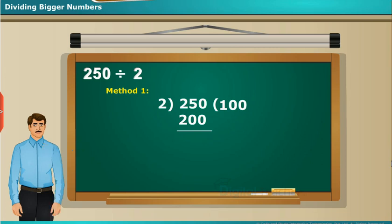Step 2: After step 1, it leaves a remainder of 50 which is 25 times of 2, that is 2 into 25 equals 50. Step 3: So 250 divided by 2 leaves the remainder as 0 and quotient as 100 plus 25 equals 125.